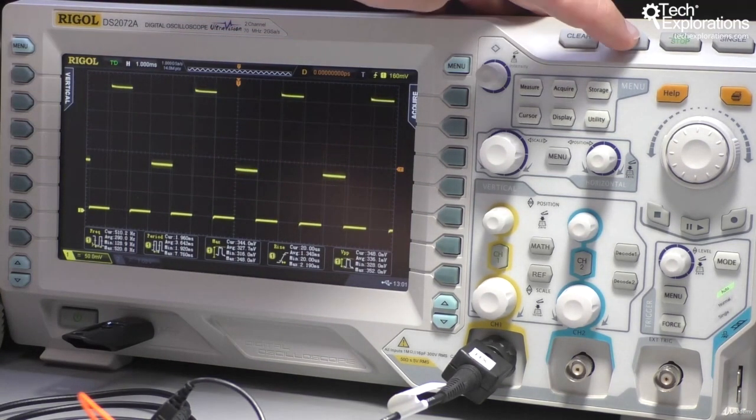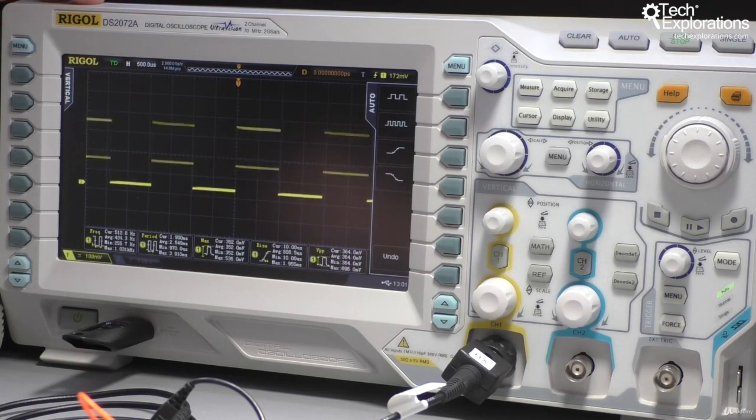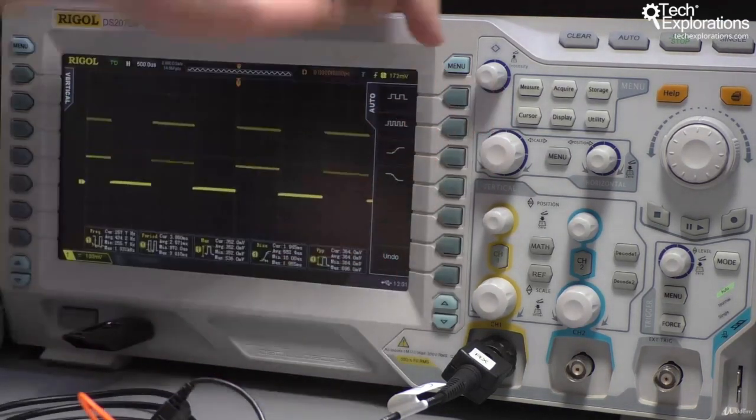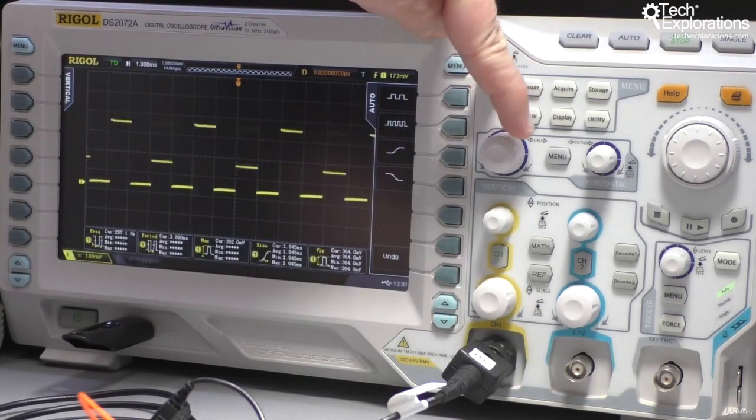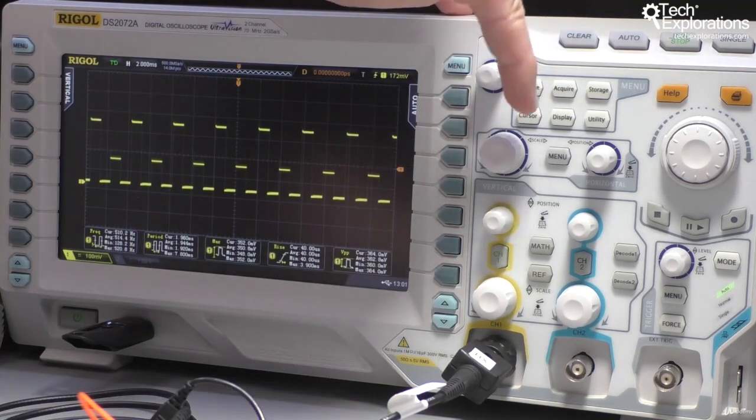I'm going to start with Auto and see what the oscilloscope does, and you can see that it's not really able to calibrate. I'm going to try the usual tricks, maybe change the timescale. At this timescale things are a little better.